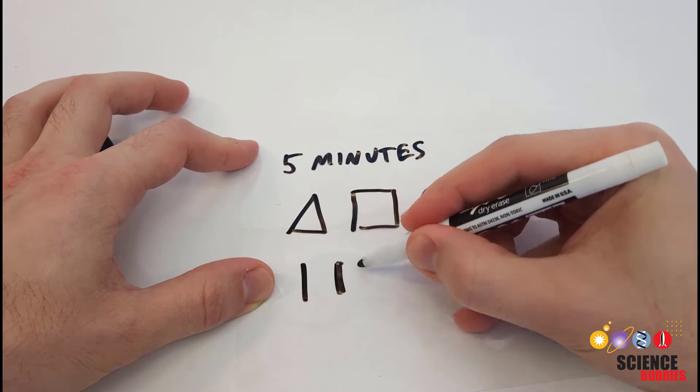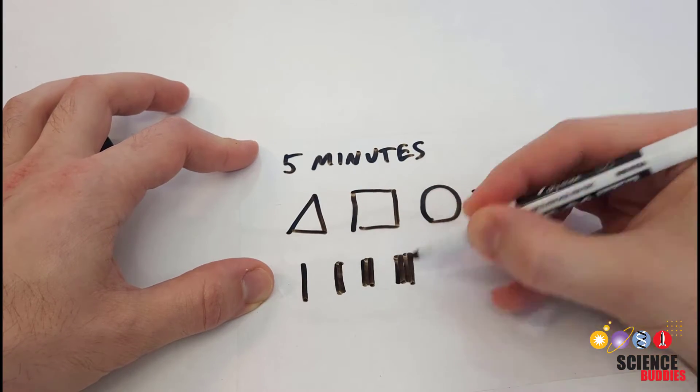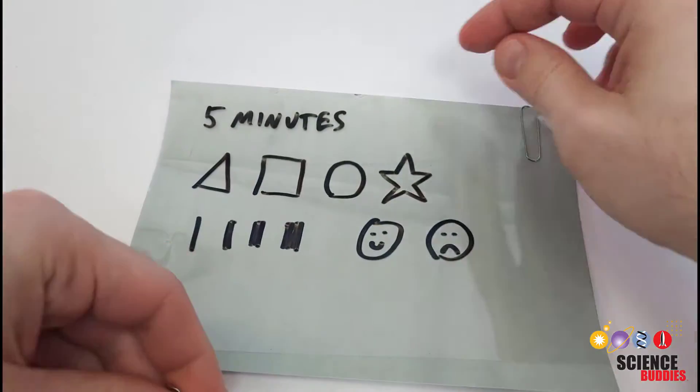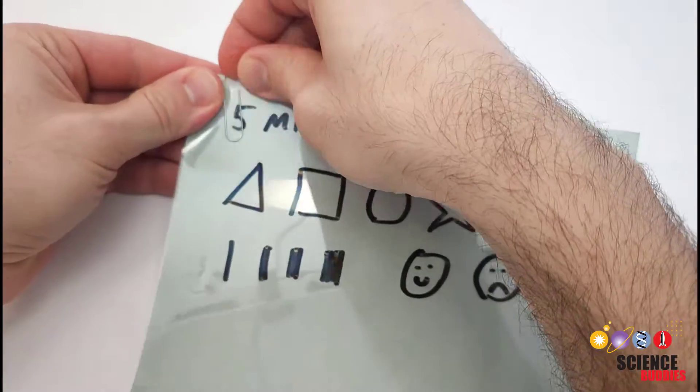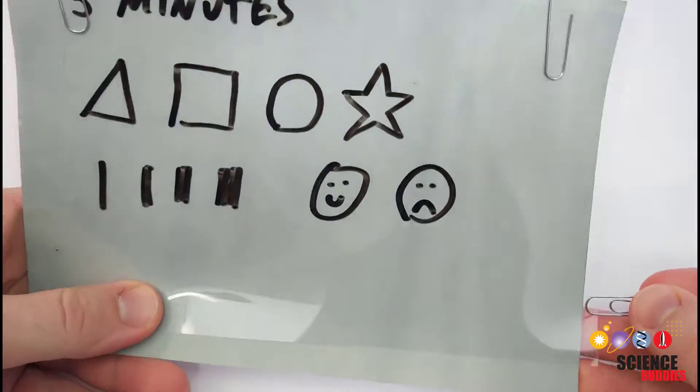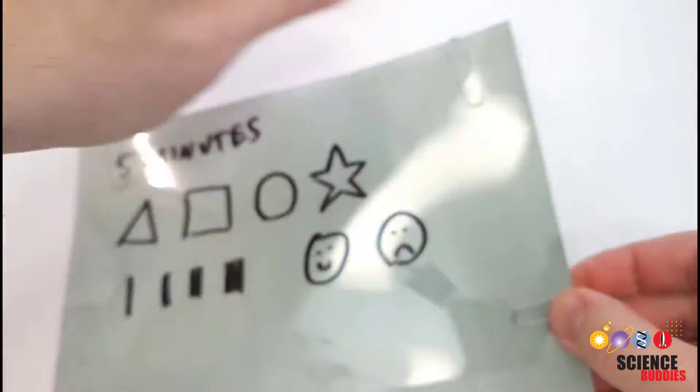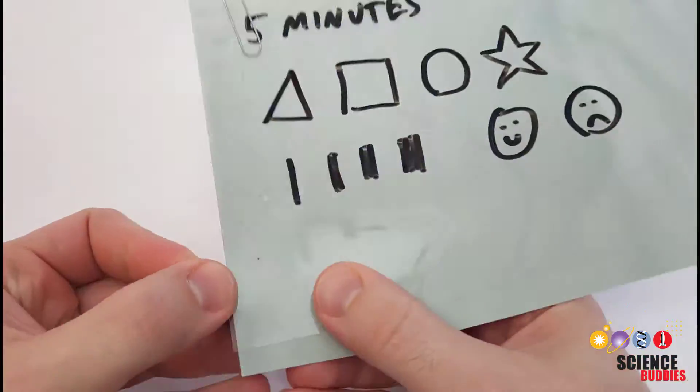Also write down the amount of time that you'll be leaving the paper in the sun. Use paper clips or binder clips to attach the transparency sheet to a piece of photosensitive paper. Make sure the two sheets are flush against each other and there are no gaps in between them.